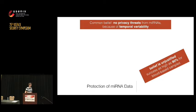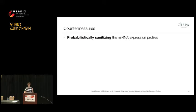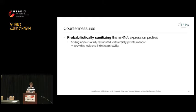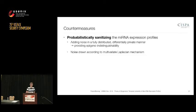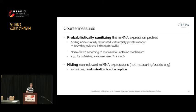This motivated us to try to protect this kind of data, and we investigated two different countermeasures. The first is probabilistically sanitizing microRNA expression profiles — adding noise in a probabilistic, fully distributed, and differentially private manner, providing what we call epigeno-indistinguishability. We draw noise from a multivariate Laplace mechanism, after which the data could potentially be published online in research databases.